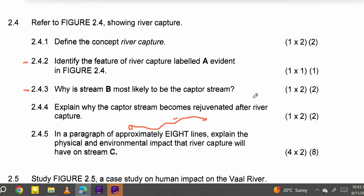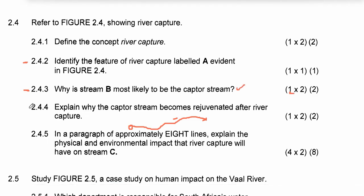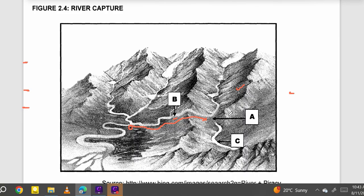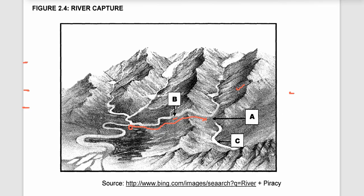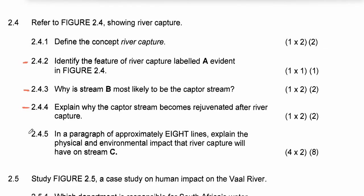You were supposed to give at least one answer there — that's correct. Question 2.4.4: explain why the capture stream becomes rejuvenated after river capture. After river capture, even before it occurred, this river had much potential for erosion because of its high volume of water. After river capture, there is even more volume of water inside the capture stream, meaning there will be increased levels of erosion that will erode the river downwards, lowering its base level.